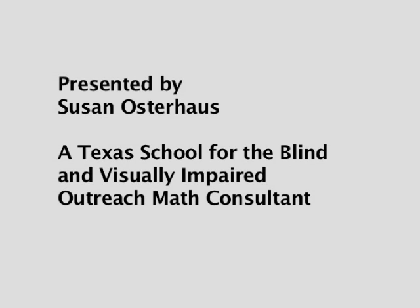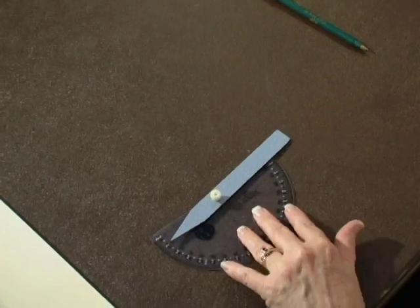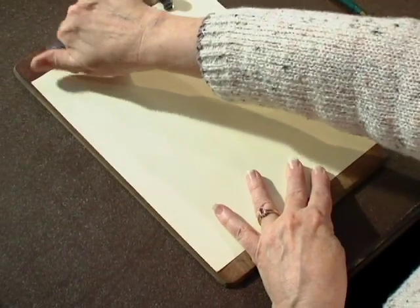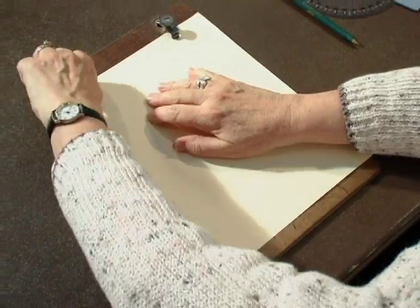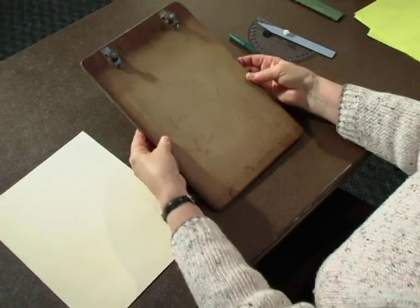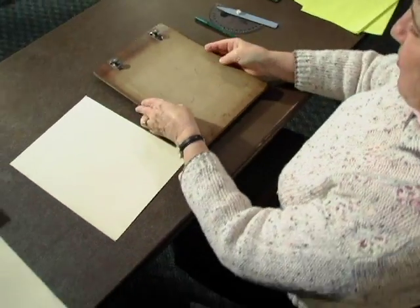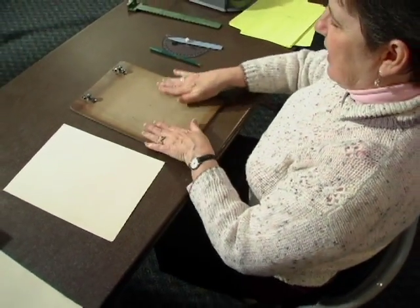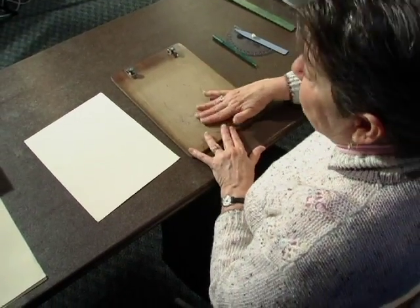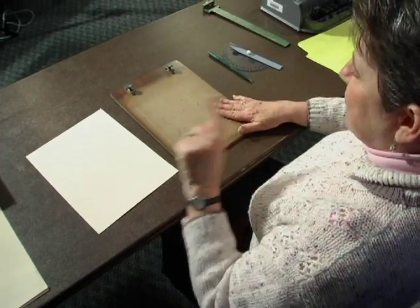a Texas School for the Blind and Visually Impaired Outreach Math Consultant. The first thing I'm going to use is something called a Sewell Raised Line Drawing Board. This is actually an old one - I think some of the newer ones might be a lighter color. It's normally used with what I call flimsy plastic paper. I don't use that,